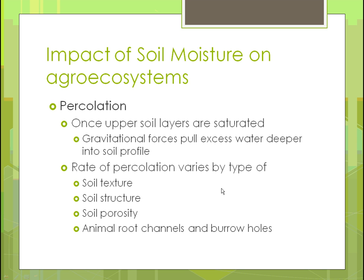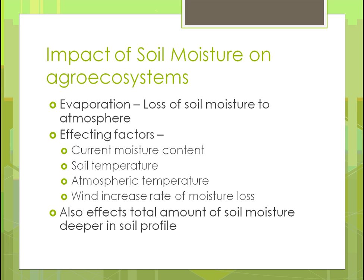If you have the right kinds of plants, you could have a very porous soil. Evaporation is the loss of moisture from the soil to the atmosphere. Factors that affect evaporation include current moisture content — a dry soil will lose very little to evaporation. Soil temperature matters, as colder soil evaporates less. Atmospheric temperature and wind also play roles — higher wind speeds increase the rate of evaporation and can result in less moisture deeper within the soil profile.